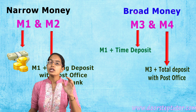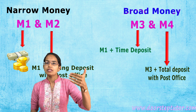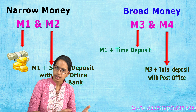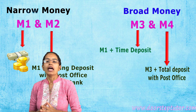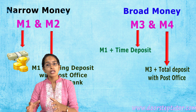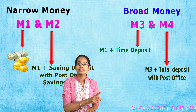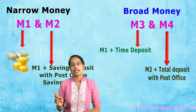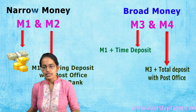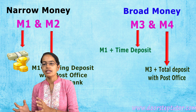M1 money together with saving deposits held with post office savings banks is called M2 money. M1 money combined with time deposits is what is known as M3 money. M4 money is M3 plus the total deposits with the post office savings organization, except the NSC — that is, the National Savings Certificate.